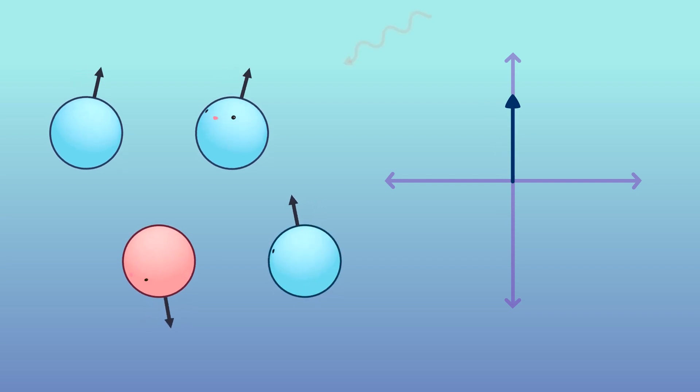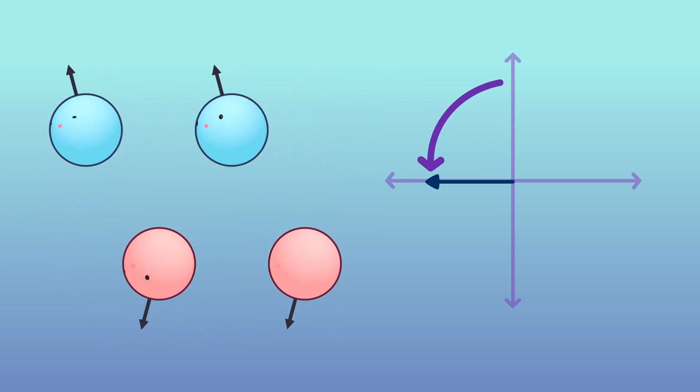At the beginning of a standard spin-echo sequence, we apply a 90-degree pulse. This means that after the RF pulse has been applied, the net magnetization vector is perpendicular to its original orientation.